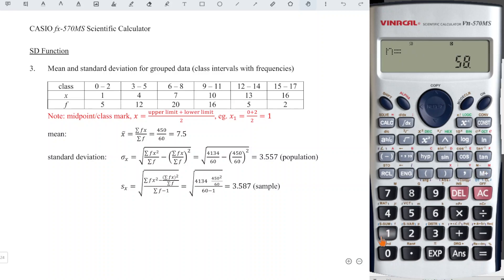And the last class, we have 16, semicolon, 2, n plus. So we already obtained all the observations, 60 observations. Then we press AC.